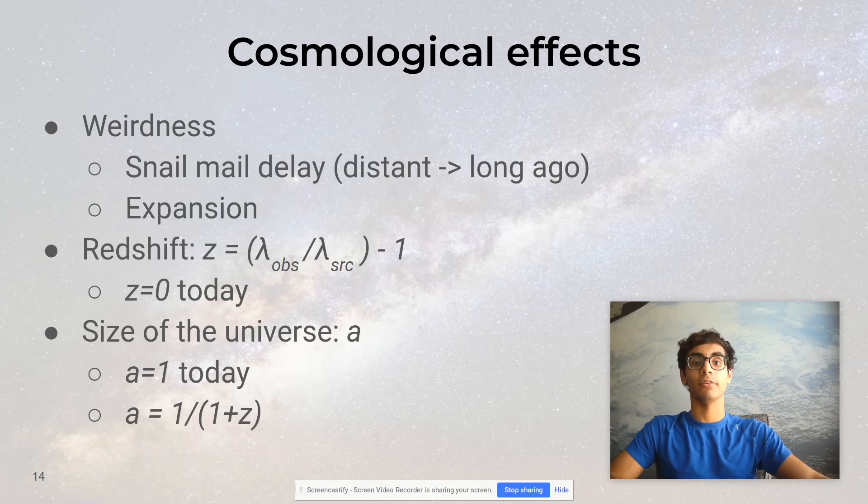I don't really have time to go into detail about this, but if you want to read more, the keywords to Google are proper distance, co-moving distance, peculiar velocity, and Hubble flow.